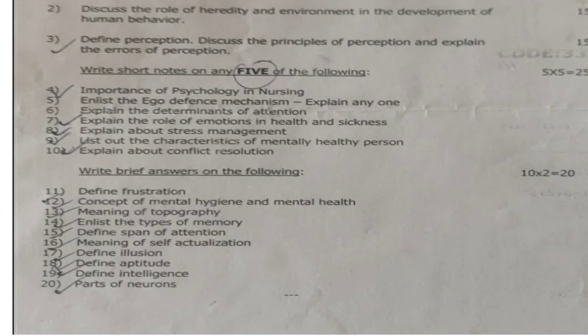Next, write short notes on any 5 of the following. From question 4 to 10, these are 5-mark questions. There are 7 five-mark questions; out of those 7, you have to answer only 5. Each question carries 5 marks, so 5 into 5 is equal to 25 marks.